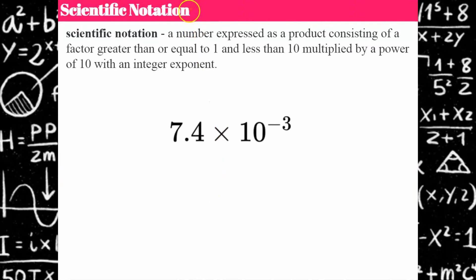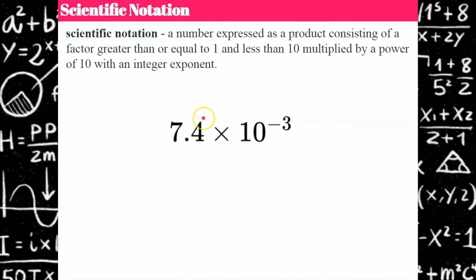Here is what scientific notation is. It is a number expressed as a product — remember, product means multiply. It consists of a factor that's greater than or equal to one and less than 10. This is the key part for today's lesson: there's a factor, and it has to be equal to one or greater and less than 10. It cannot be equal to 10. So you're going to have a decimal, or a whole number, as long as it's less than 10. The smallest your factor can be is one.